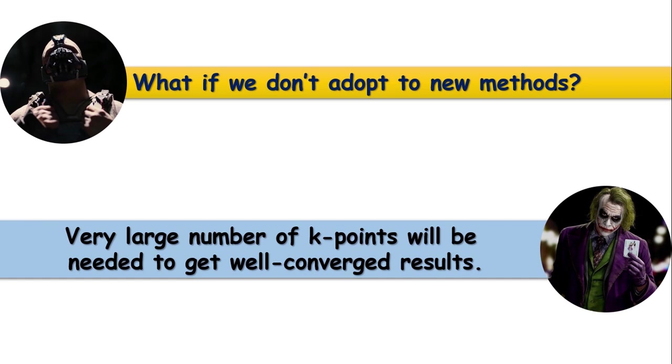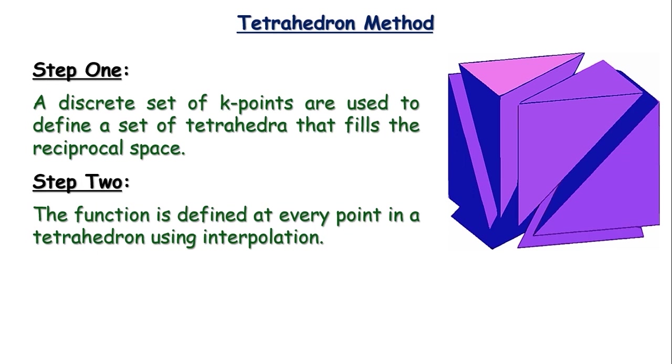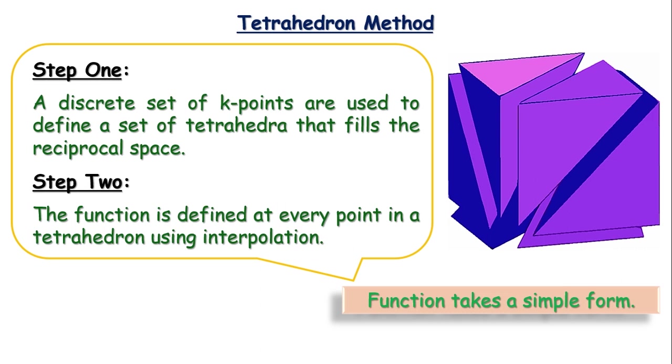Among many different useful algorithms, we will speak about two of them here briefly. First one is called the tetrahedron method. In this method, a discrete set of k-points are used to define a set of tetrahedra that fills the reciprocal space. Then, the function to be integrated is defined at every point in a tetrahedron using interpolation. So, interpolation is what we use here. Once interpolation is complete, the function to be integrated has a rather simple form at all positions in k-space.